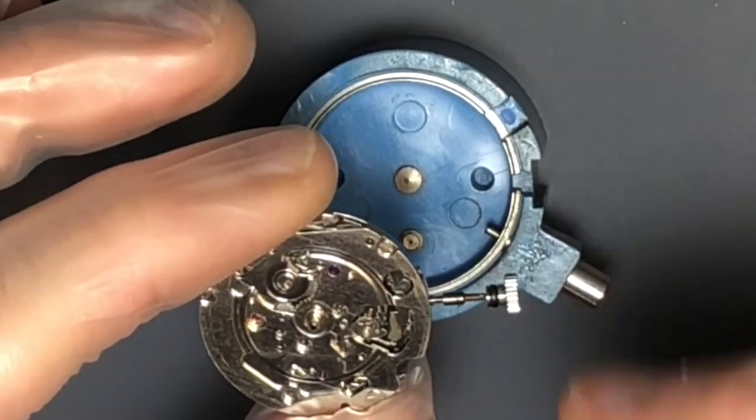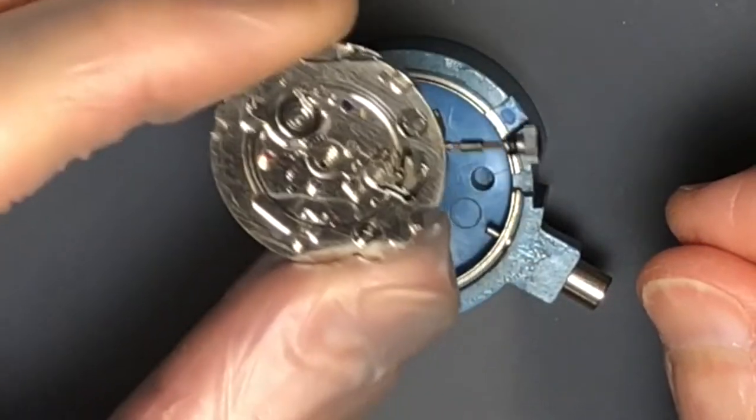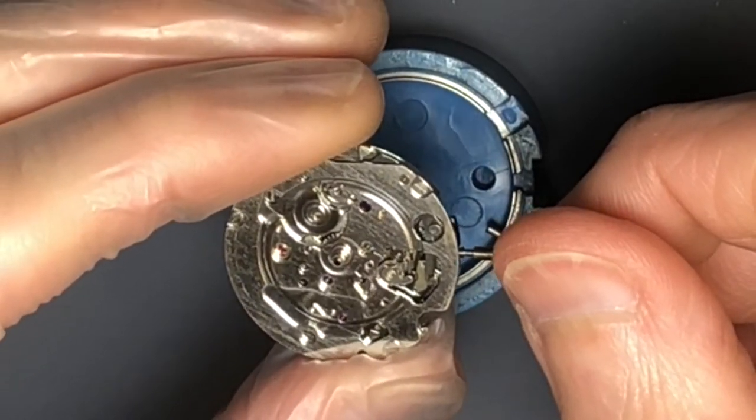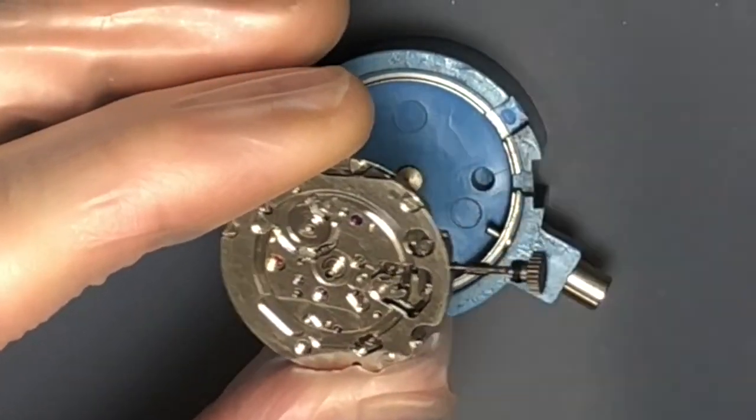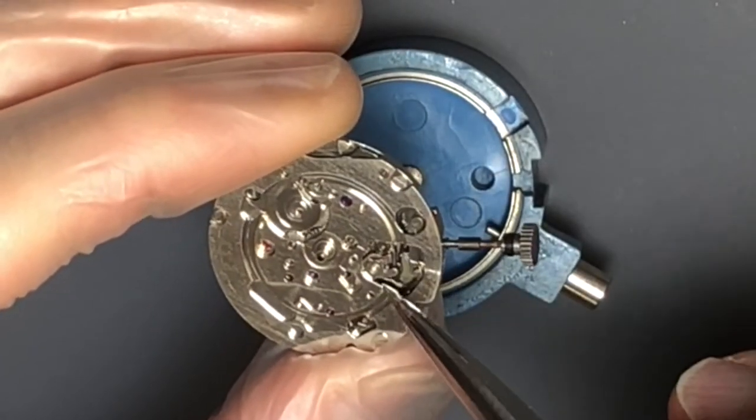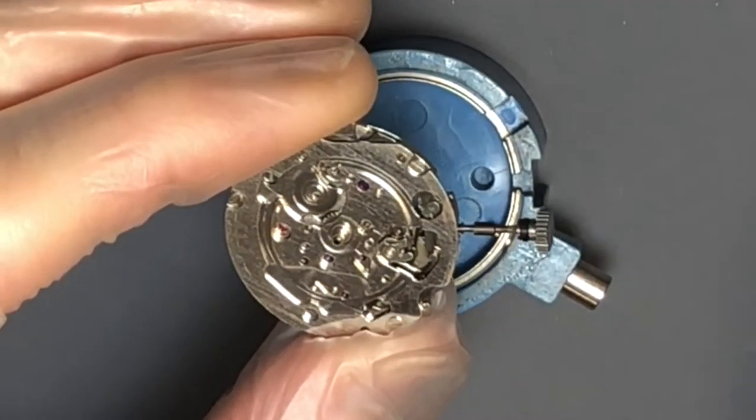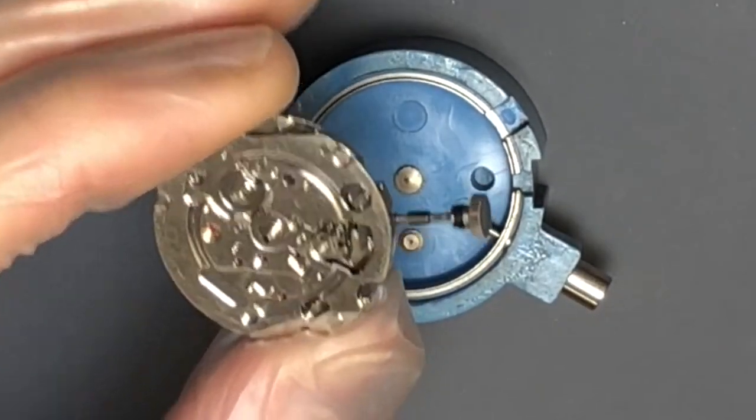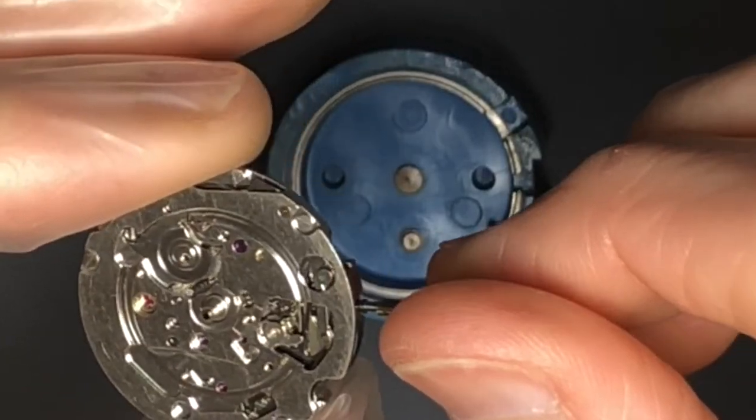We'll also check the quick set with the stem in the second position. I know we said we're going to replace this one, we will, just kind of using it as a placeholder at the moment. But counterclockwise, you can see this star wheel here would come into contact with an intermediate wheel here that would advance the day disc.